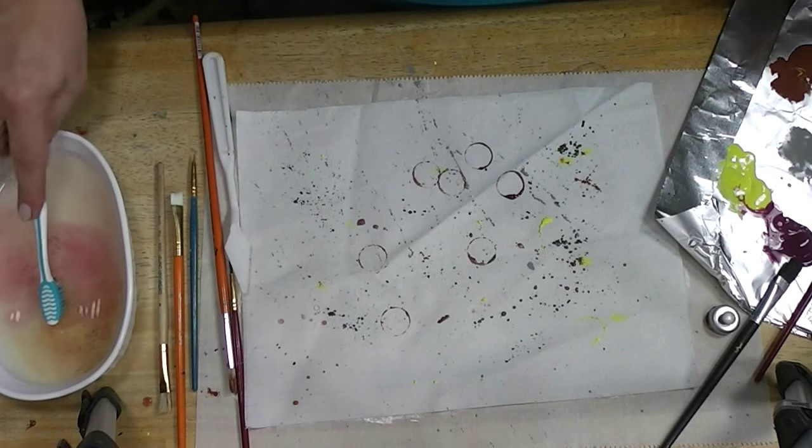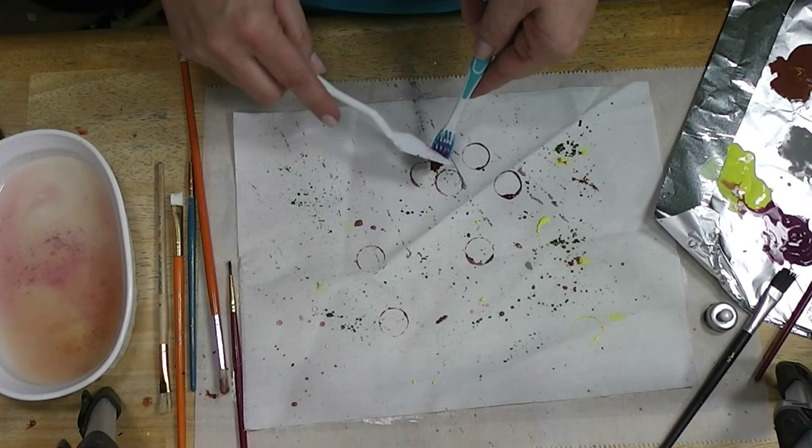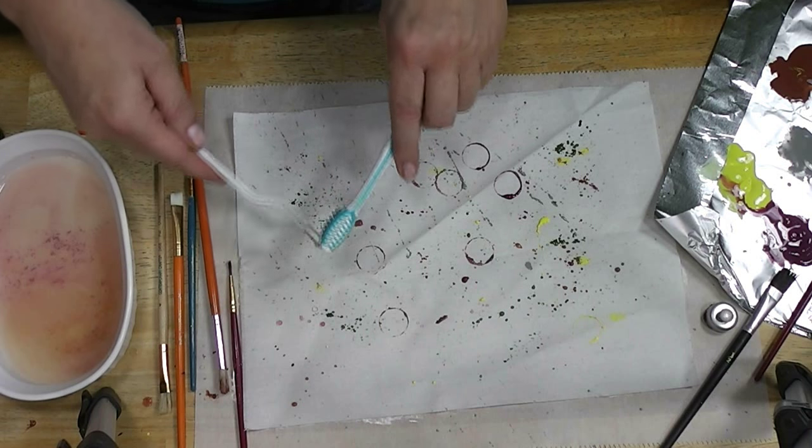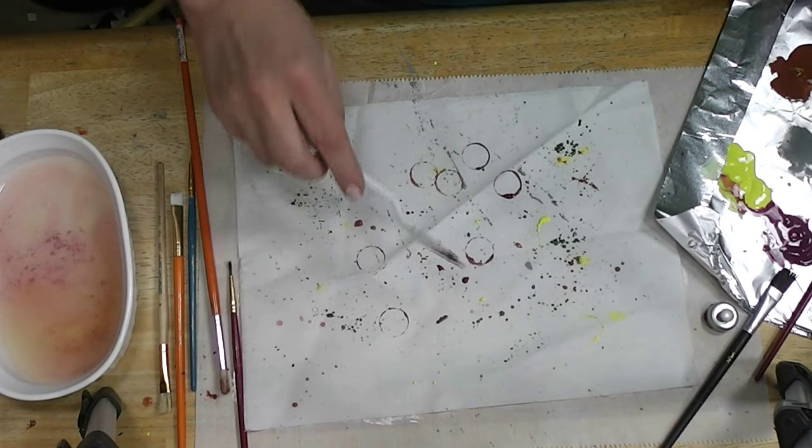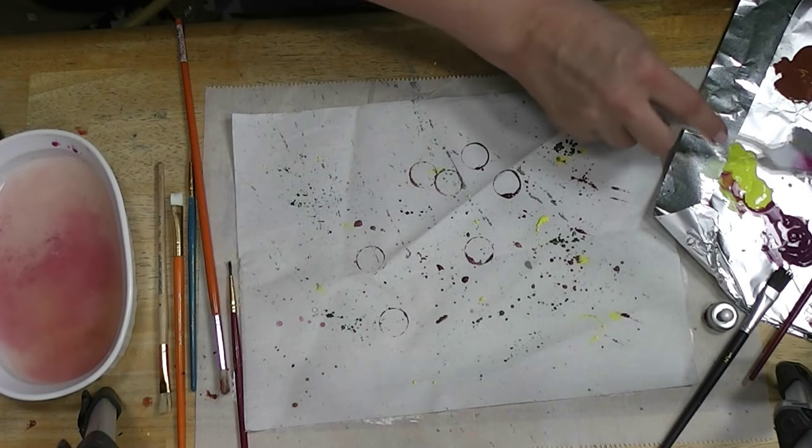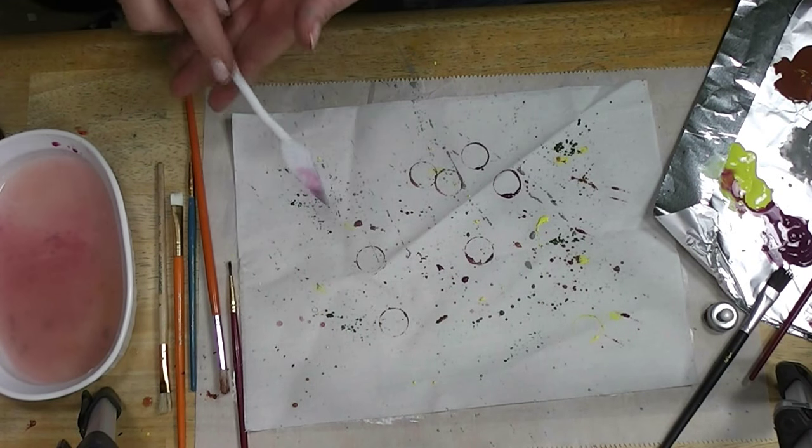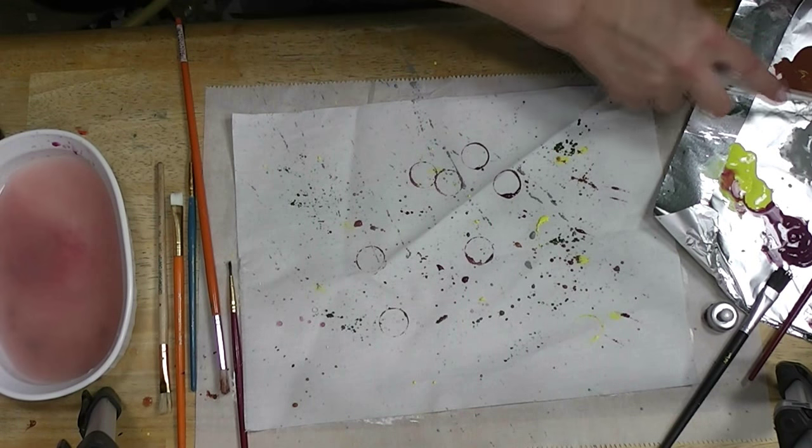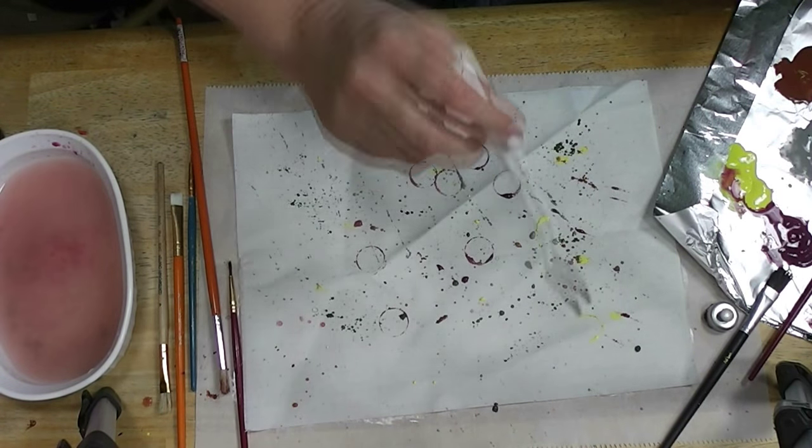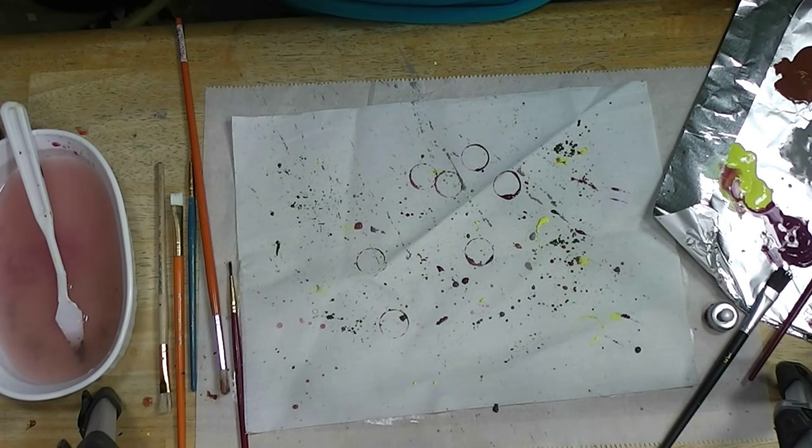This is just supposed to represent a drop cloth that's been used a lot. We can get the toothbrush nice and wet and just splatter. There is paint going all over my room. But you can continue. You can put as much or as little paint on here as you want. You can get some water on your palette knife. And then you'll get some bigger drips. And it's up to you how much you want to get on there. I'm going to let this dry.